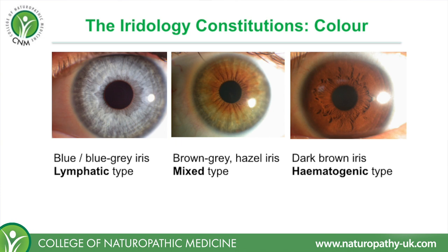Next to that, we have the intermediate type — brown, grey, or sometimes described as hazel. The thing about this is that it can be quite pale, or it can be almost completely dark. There's a very wide spectrum of colour in this particular type. We call this the mixed type, because it is a mixture of the two: pigmented and unpigmented. Sometimes also called the mixed biliary type. That word biliary refers to the liver and gallbladder, so we know there's something to do with liver and gallbladder — maybe digestion — affecting these types.